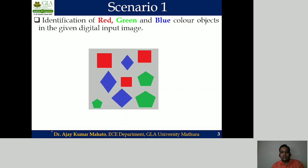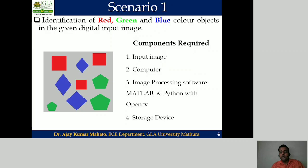This is the first scenario. In this project work, we have to identify the red object, green object, and blue object in a given digital input image. To perform this project work, we need the following components. We need an input image — this input image is our problem domain, in which we have to identify the red, green, and blue color objects.